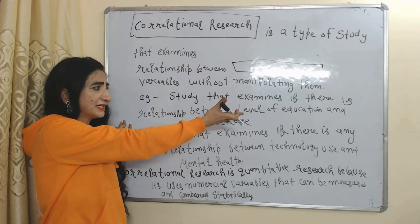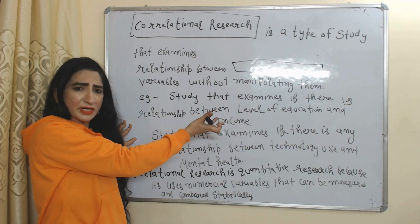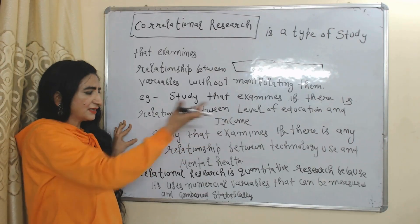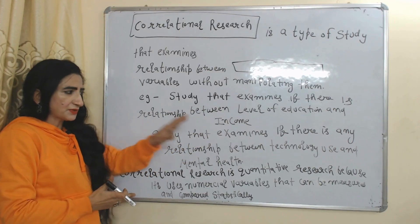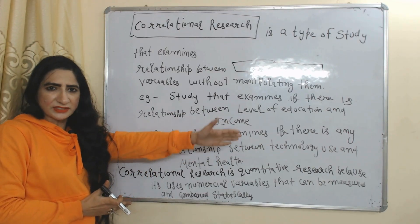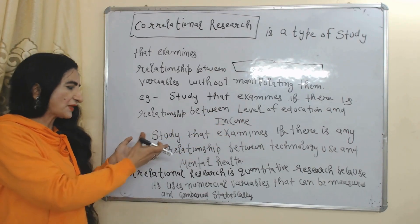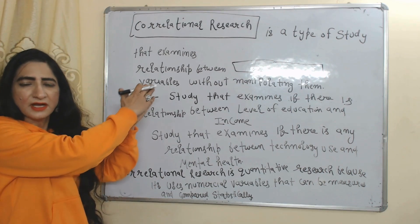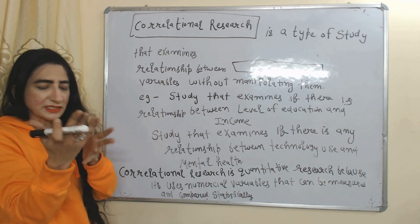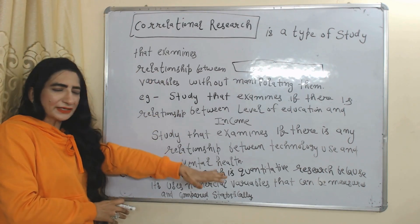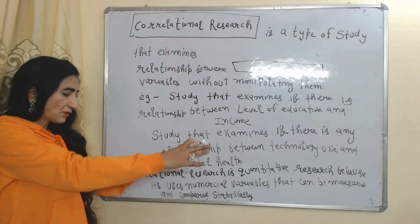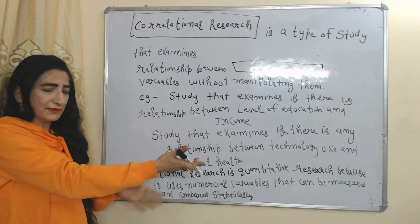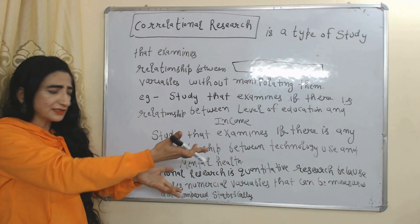Similarly, a study that examines whether there is any relationship between technology use and mental health would also be called correlational research. Correlational research is quantitative because it uses numerical variables that can be measured and compared statistically.